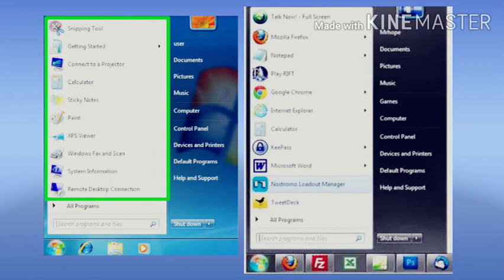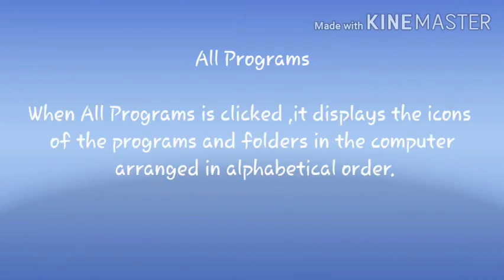When you point to the arrow, a list of recently opened files opens up. Next, All Programs: when 'All Programs' is clicked, it displays the icons of programs and folders in the computer arranged in alphabetical order.